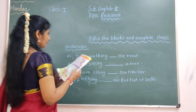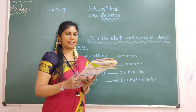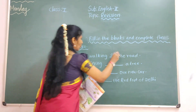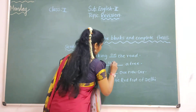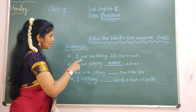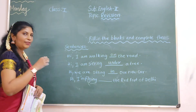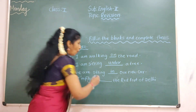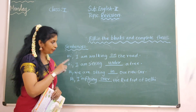Next one, page number 86. First one: I am walking on the road. Second: I am sitting under a tree. Third: we are sitting in our new car. Fourth: I am flying over the Red Fort of Delhi.